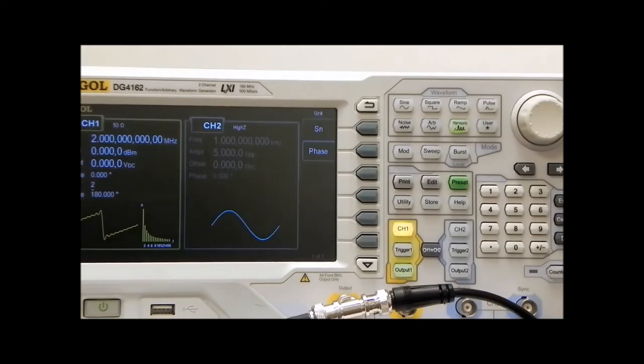So that's some of the feature of the harmonic function that is in the DG4000s. You've seen that you're able to set as many as 16 harmonics, and you are able to set them for their amplitude as well as the phase.